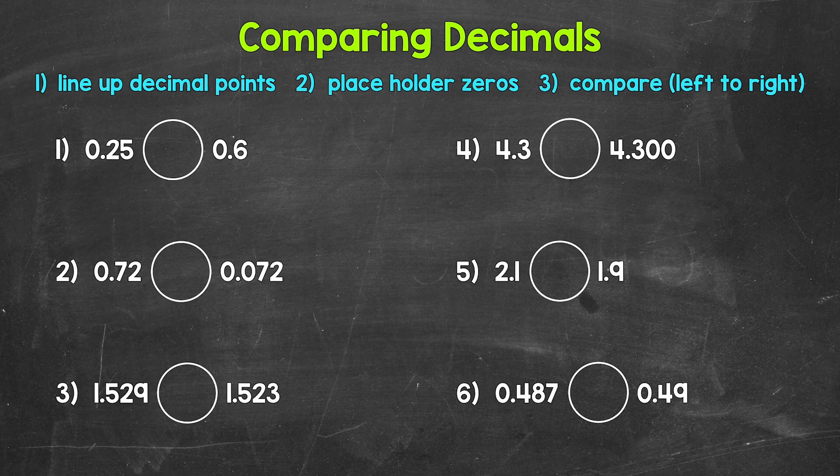Let's jump into number one, where we are comparing 25 hundredths and 6 tenths. Now, please keep in mind, we can't automatically say that 25 hundredths is greater because it has more digits, or because 25 is greater than six. It doesn't work that way when it comes to decimals. The length of a decimal, the number of digits, does not determine which decimal is greater.